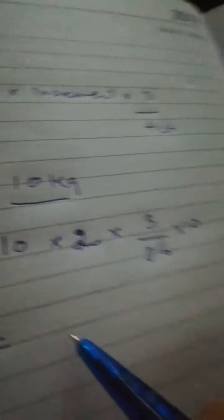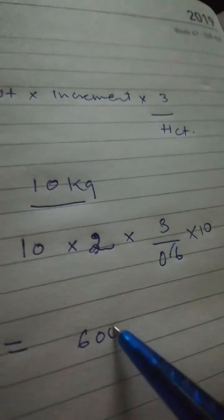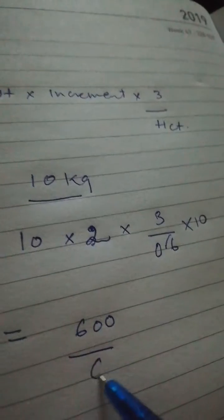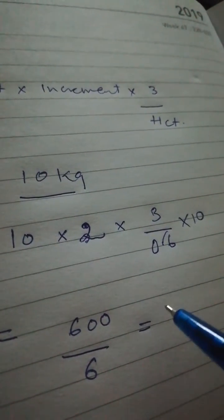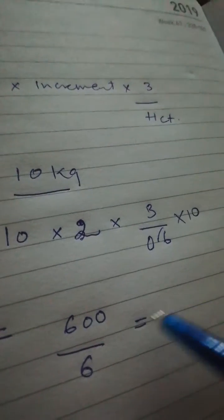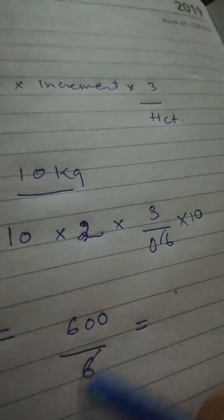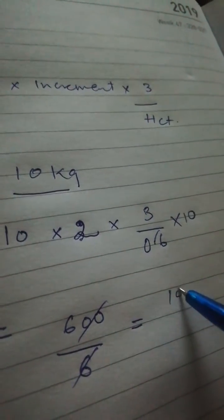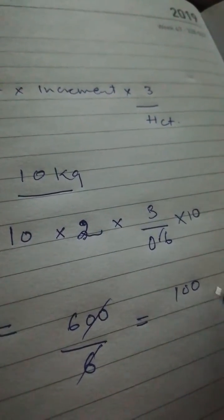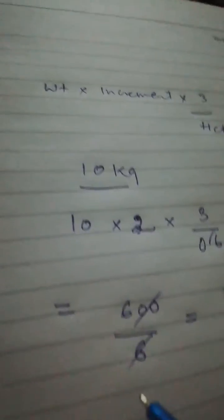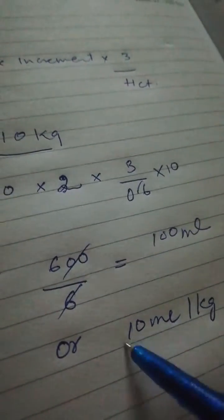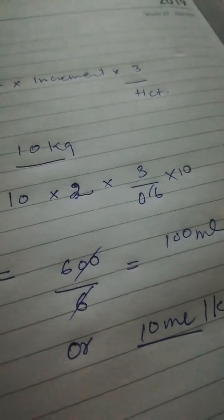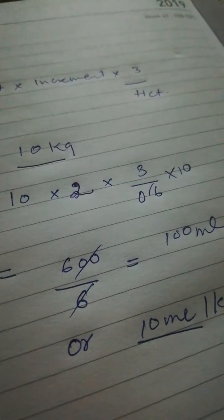will get 600 divided by 6. So if we divide it, it will be 600 by 6, which equals 100 ml total, or we can say 10 ml per kg. So the principle is that we normally, if you have